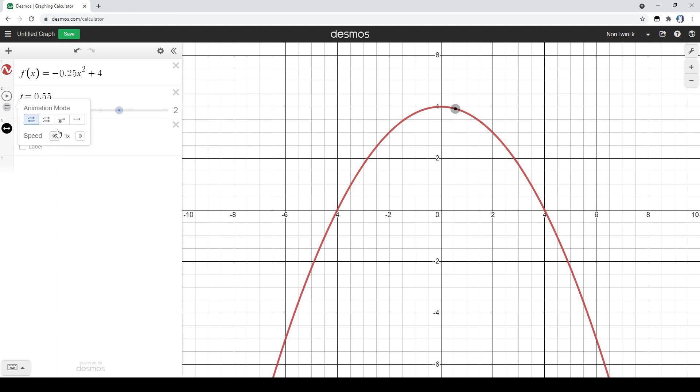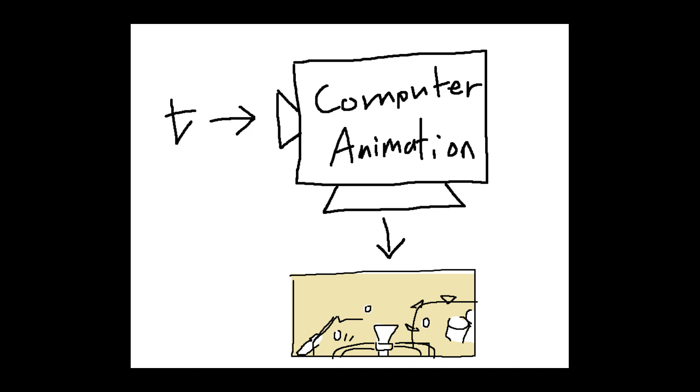And notice how as I move it, it gives the illusion of motion. It really looks like someone's tossing a ball up in the air. This is just an example, but this is also the essence of how computer animations are done. They're all a function of time, like this example is.